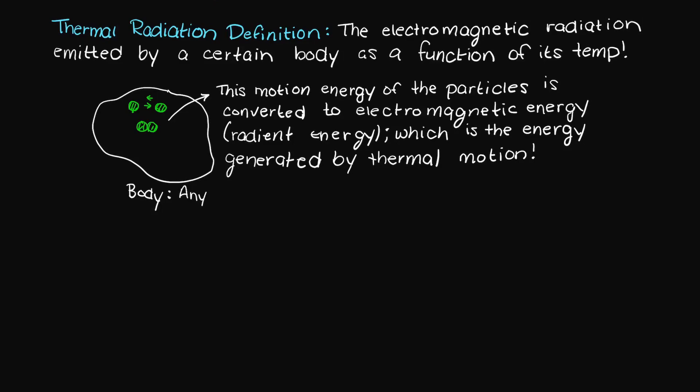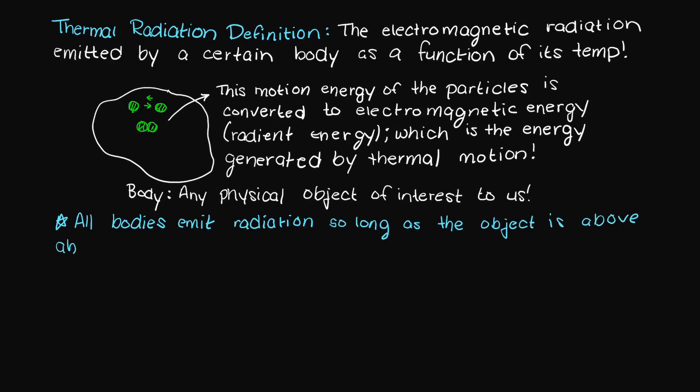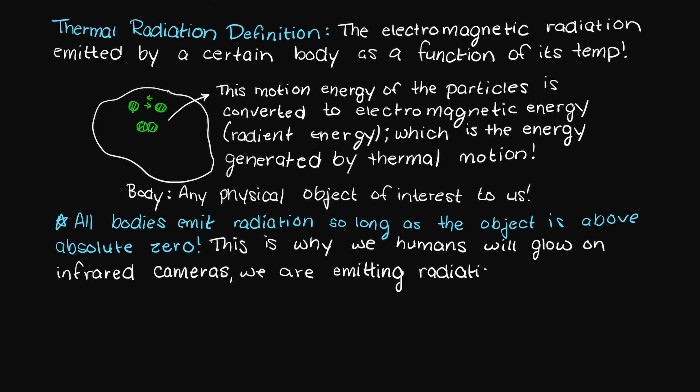A body just refers to literally anything of interest to us, whether it be your bowl of cereal, you, your cat, your keyboard, or a star in some distant galaxy. All bodies emit thermal radiation if they are above absolute zero. This is because at absolute zero, there is no particle movement, and therefore there could be no conversion from kinetic energy to radiant energy.